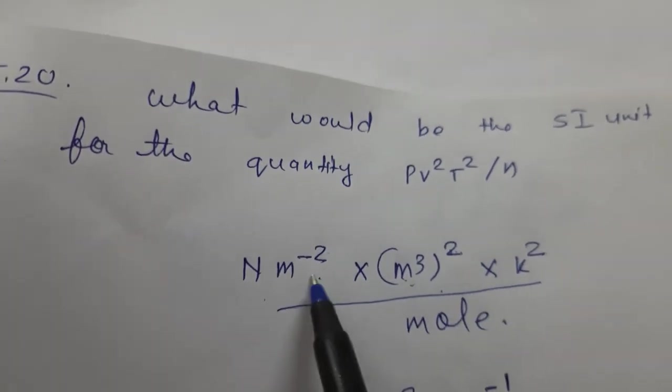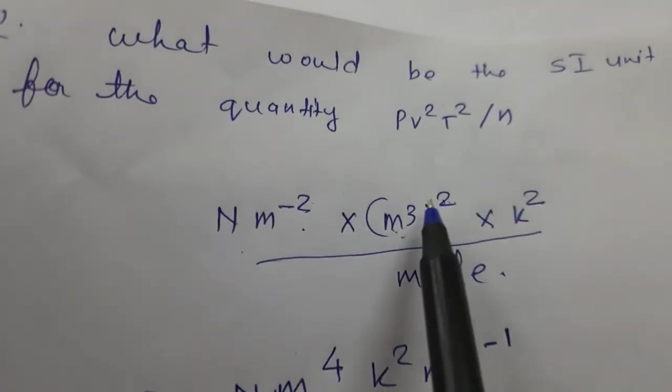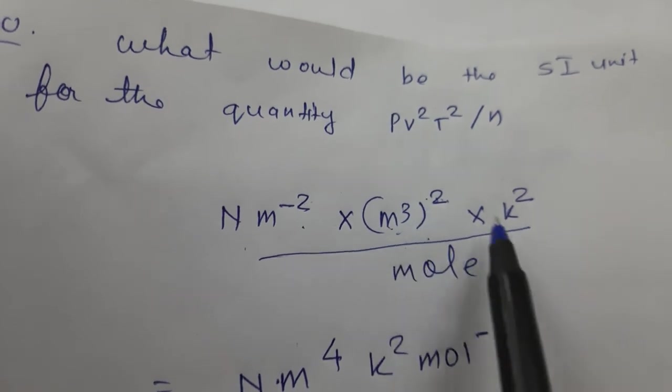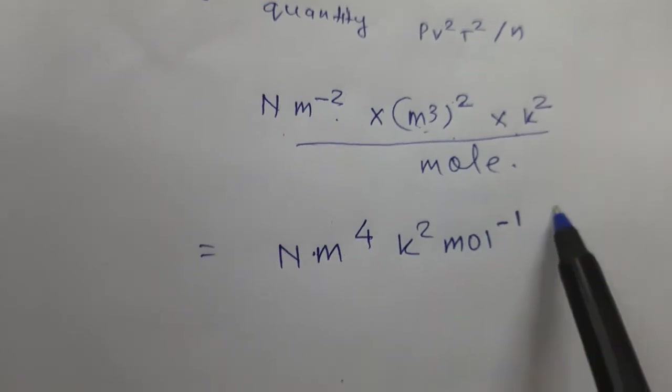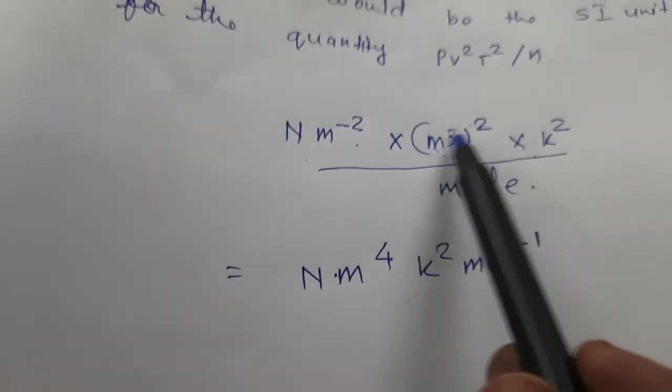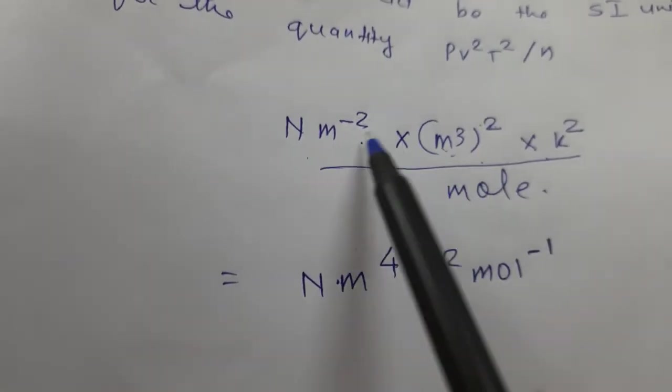Meter cube into square, because V square is there. Kelvin square because T square is there. N means mole, so mole.